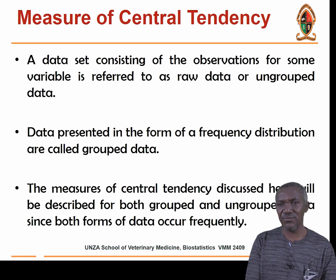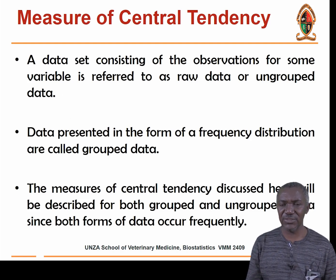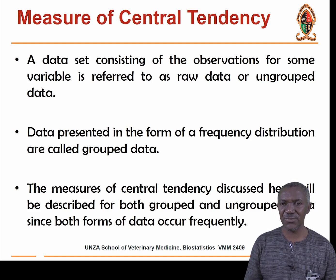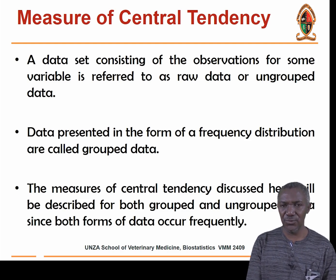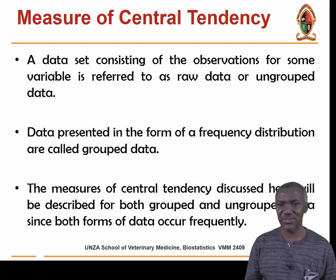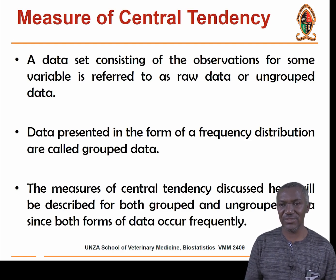A dataset consisting of observations for some variable is referred to as raw data or ungrouped data. For instance, if you are doing a survey and went to farms to look at the types of breeds, you observe the different types and heads. What you have written on your data collection sheet — that is raw data. But you can also organize this data and present it in a frequency distribution, called grouped data.